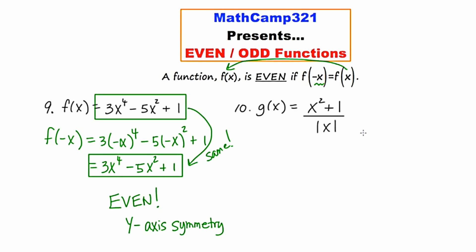Let's take a look at example ten: g of x is equal to x squared plus one, all over the absolute value of x. Certainly this is not a graph I've ever looked at — this is very strange. So I want to know if it has y-axis symmetry, and I'll use the test for evenness. I'm going to start by replacing every occurrence of x with negative x.